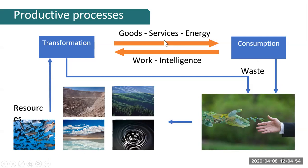We can also change the goods or services themselves — for instance, having an entirely properly designed product that can be recycled. This is how we understand that there is a cycle, even if we are not fundamentally changing it.